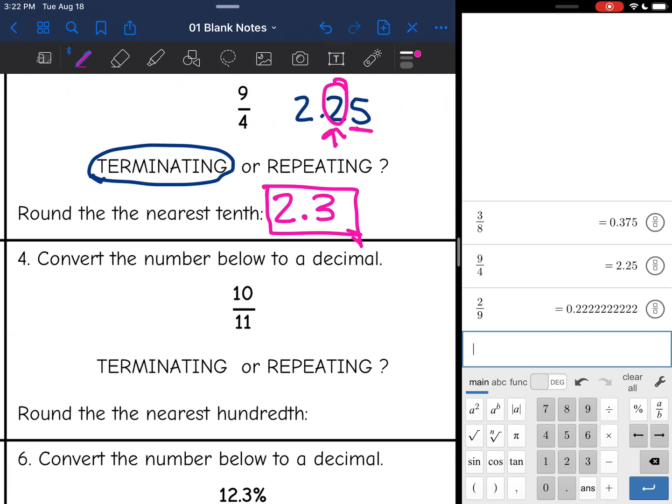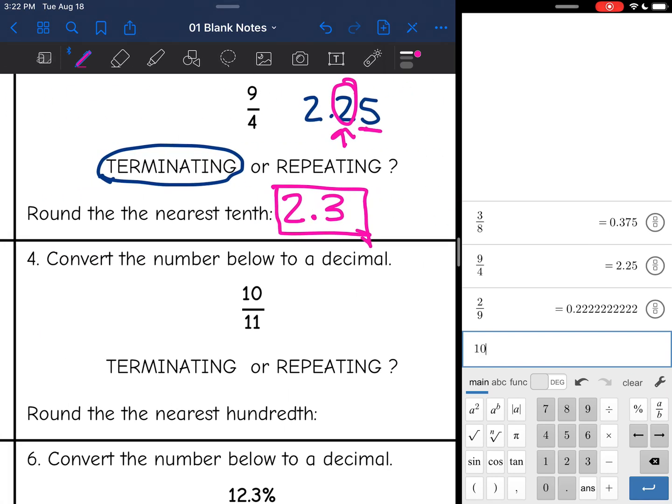Okay, let's look at number 4, 10 elevenths. I'm going to do 10 divided by 11, and I get 0.909090, and it looks like that just keeps on repeating. So this is a repeating decimal. It was 0.9090, and so on.